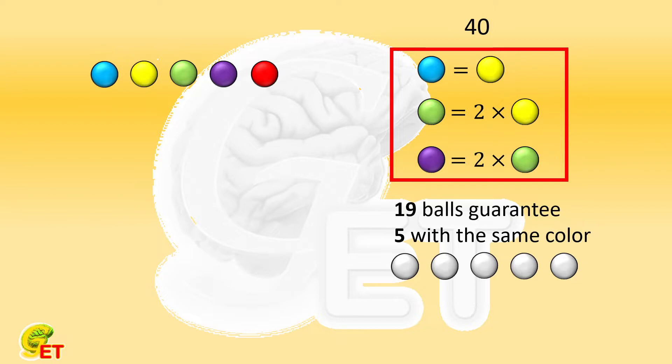The number of yellows is the same as the blues. The number of greens is twice the blues. The number of purples is 4 times the blues. By keeping those in mind, let's look at the third condition.